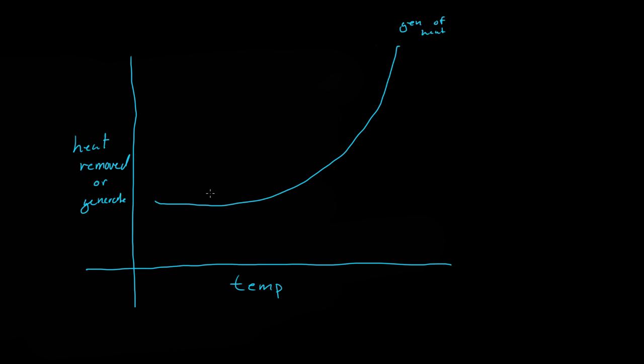Now for a coolant line, assuming that you have a constant supply of water running through at a uniform rate, if you increase the temperature of the system, you increase the amount of heat that that coolant system can remove. So this would be the coolant, or the heat removed.